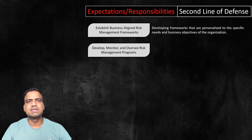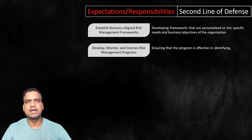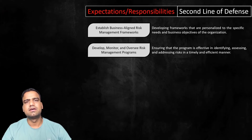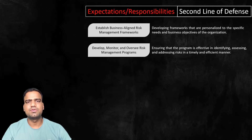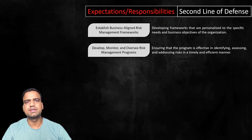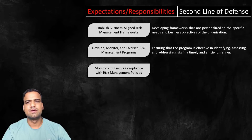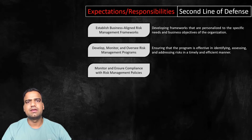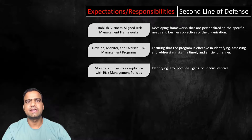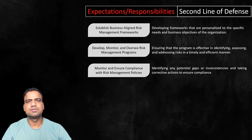The second line is also responsible for developing, monitoring, and overseeing risk management programs. This involves ensuring that the program is effective in identifying, assessing, and addressing risks in a timely and efficient manner. A company's risk management program may include regular risk assessments, training for employees on risk identification and mitigation, and incident response procedures. Monitoring and ensuring compliance with risk management policies involves identifying any potential gaps or inconsistencies and taking corrective actions to ensure compliance.